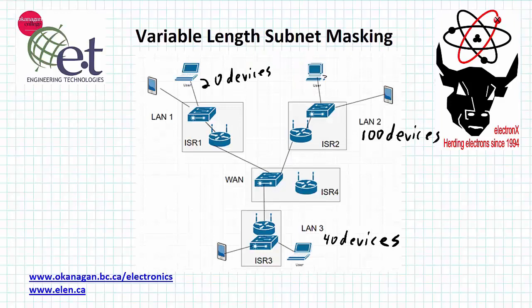Welcome to the Electronics Channel. I'm David Williams. In this video I want to talk about Variable Length Subnet Masking. Variable Length Subnet Masking, or VLSM, is the process of splitting an IPv4 network into smaller networks where the new networks are not all the same size.